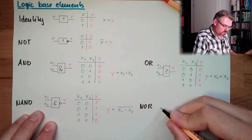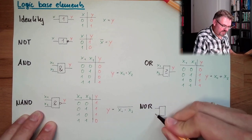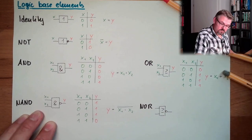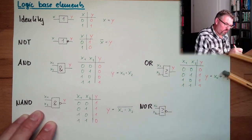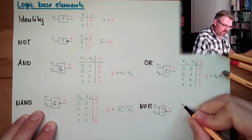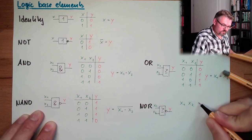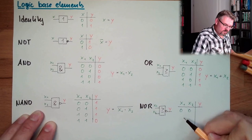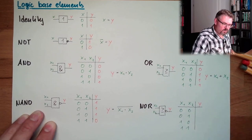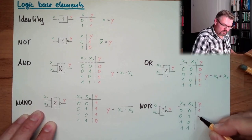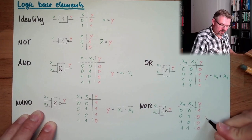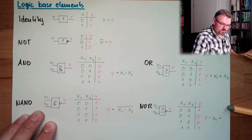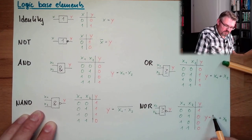And where there's a NAND, there's also a NOR — NOT OR. The symbol is exactly like the OR, but with a little ring at the end. We have x1, x2, y. The table of truth — all combinations: 0,0 — 0,1 — 1,0 — 1,1 — and it's exactly not that, so the outputs are 1, 0, 0, 0. The Boolean equation is y equals NOT of x1 or x2.